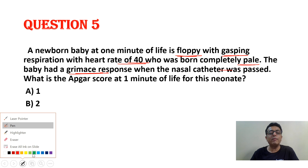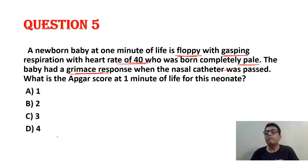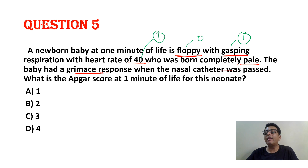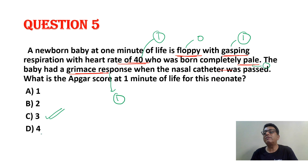If baby is floppy — APGAR tone score is 0. Gasping means irregular respiration — score is 1. Heart rate 40 means less than 100 — score is 1. Pale — score is 0. Grimace in response to catheter — score is 1. So 1 + 1 + 1 = APGAR score of 3.